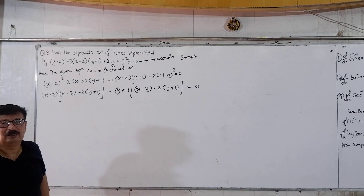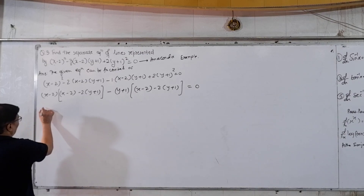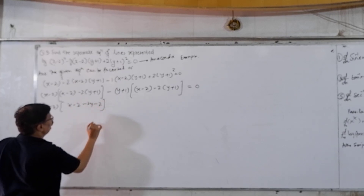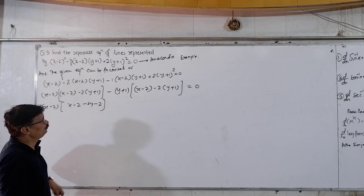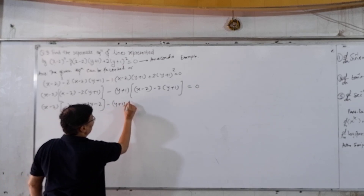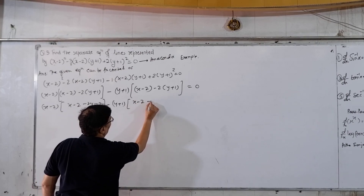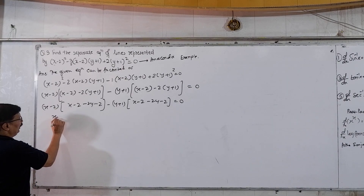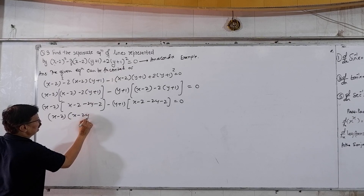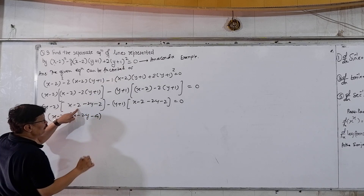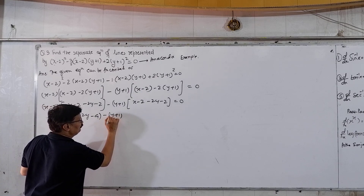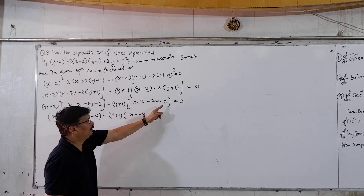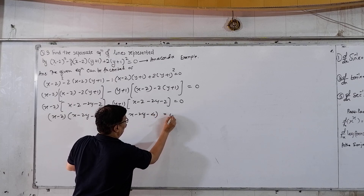After this it is not very difficult. So now I write: (x minus 2) times [(x minus 2) minus 2(y plus 1)] minus (y plus 1) times [(x minus 2) minus 2(y plus 1)] equal to 0. Opening the brackets: (x minus 2)(x minus 2y minus 2) minus (y plus 1)(x minus 2y minus 2) equal to 0.